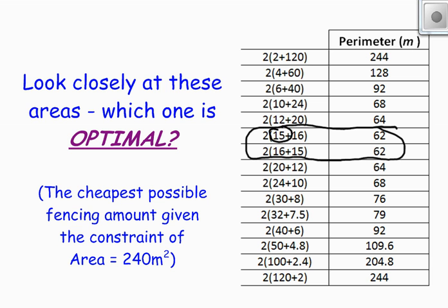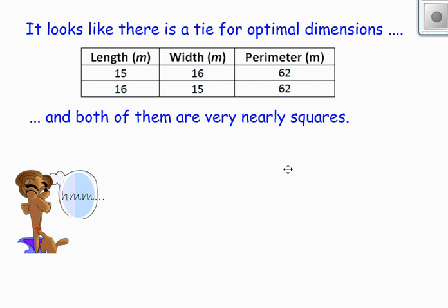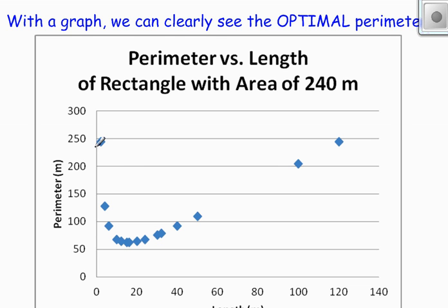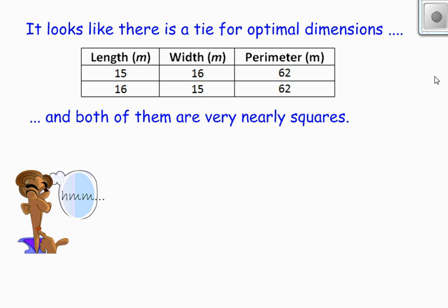You can see in the graph that there is a minimum value for perimeter. And unfortunately, we're running out of time in this video. So I'm going to have to continue it in video number two.